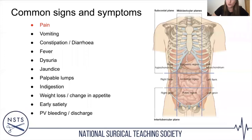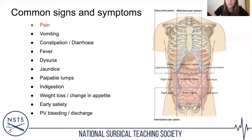For example, someone presenting with right upper quadrant pain — the difference between a colicky type pain and a constant pain might indicate whether it's biliary colic or more of a cholecystitis picture. It's also really important to ask about changes in bowel habits as well as vomiting.